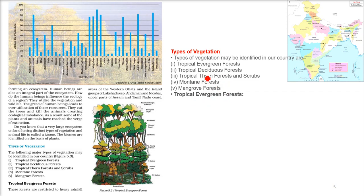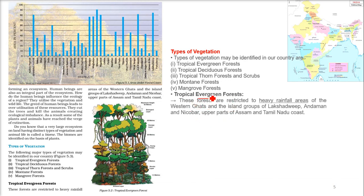Tropical evergreen forest — 'tropical' means found in the tropical region, 'evergreen' means it will always be green. From a helicopter or airplane, you will always find tree cover there. These forests are restricted to heavy rainfall areas — the western Ghats, islands of Lakshadweep, Andaman Nicobar, upper parts of Assam, and Tamil Nadu coast.